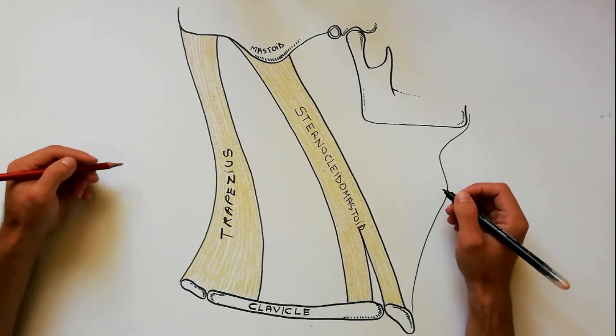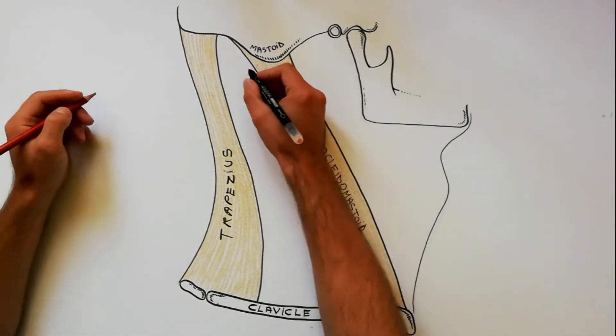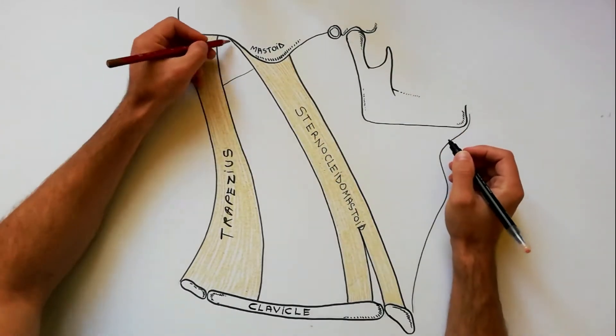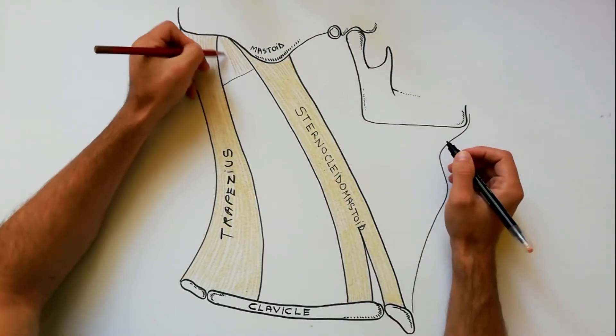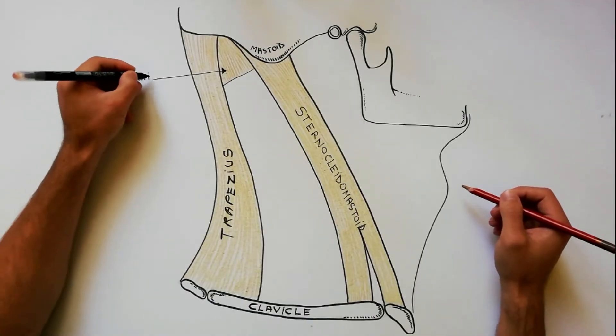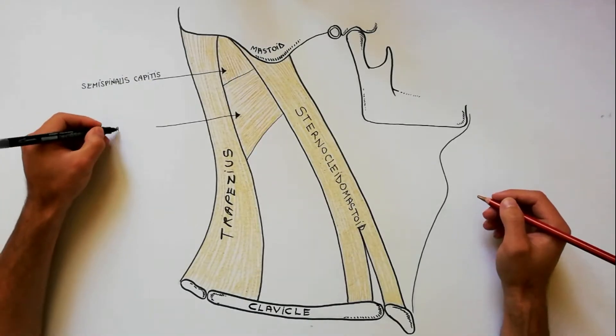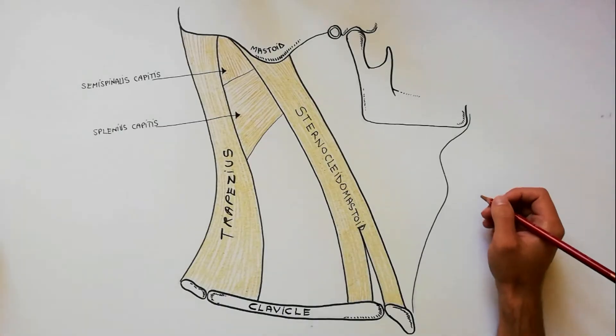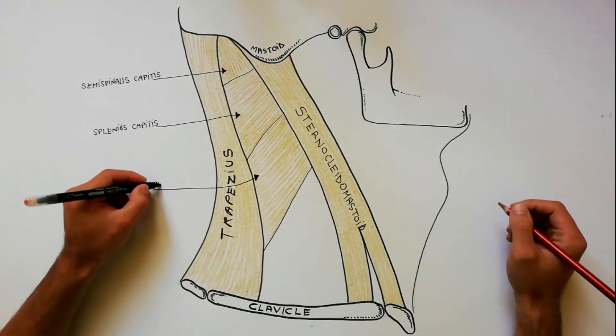The floor of posterior triangle is muscular and is formed from above downwards by the following muscles: semispinalis capitis, splenius capitis, levator scapulae,